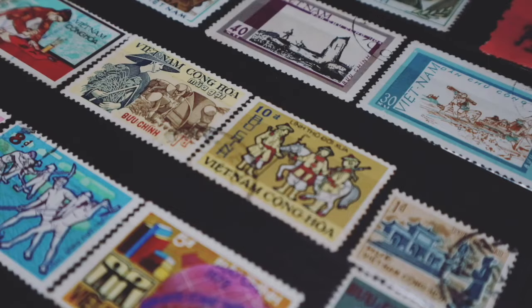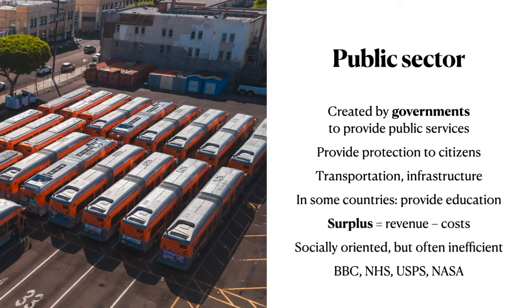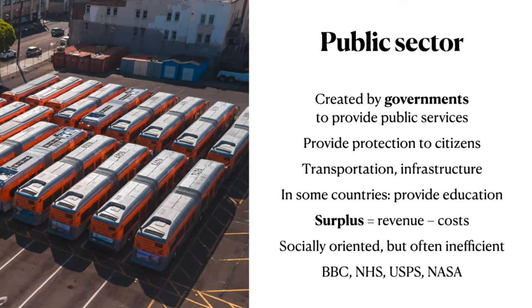For example, in many countries, postal service is nationalized — this is a public sector business. But when you go to the post office, you still buy a stamp and you have to pay for it. Some public sector businesses actually make money. But it's not a privately owned company, so all the profits made are not distributed between owners because there is no owner as such — they belong to everyone, they belong to the country. That is why we do not call it profit; we call the positive difference between revenue and costs surplus.